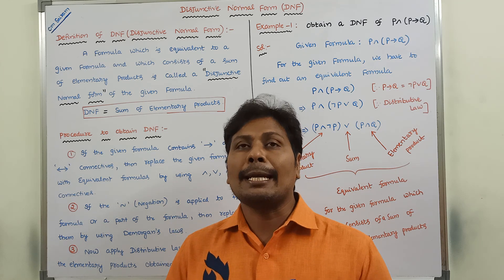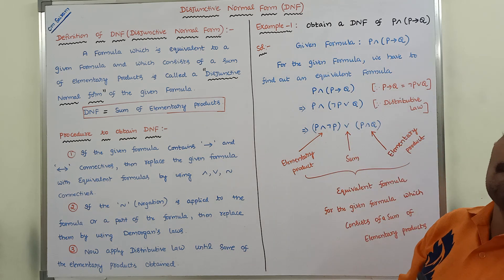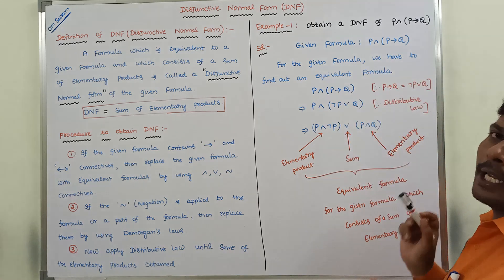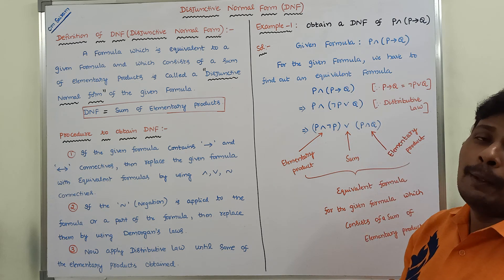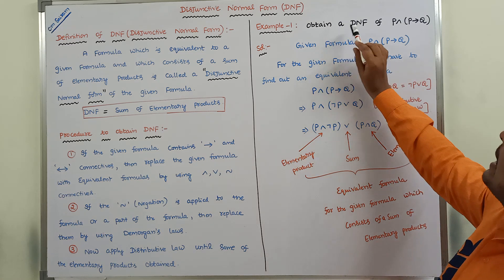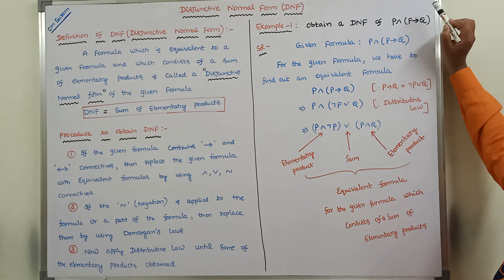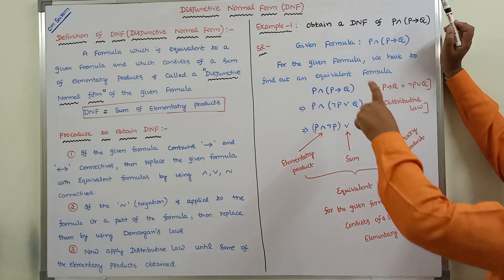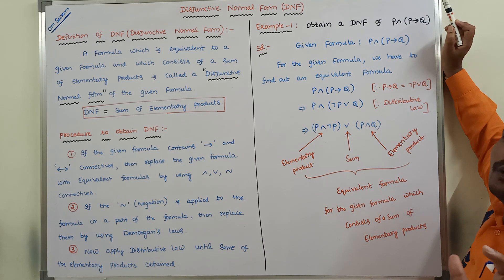The definition can be explained by using one example. So this is example one. For your understanding purpose, I have already written the solution. I am explaining each and every part of the solution. Please listen carefully. Obtain a DNF of P ∧ (P → Q). For the given formula, we have to find out the equivalent formula which consists of a sum of elementary products.